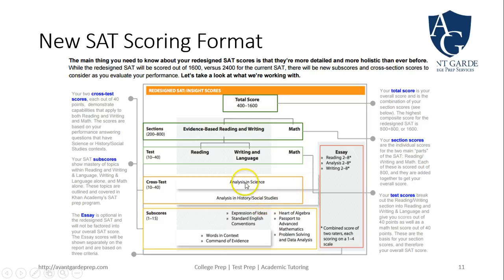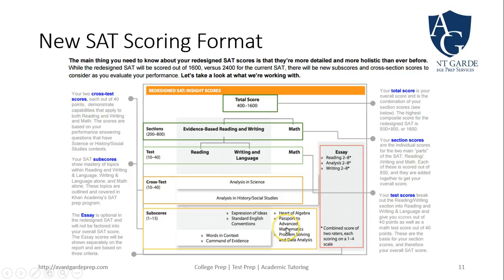Colleges may potentially use the science score, but it likely won't be used very often — the ACT has something similar and many colleges don't look at those individual subsection scores. There are also sub-scores on a 1 to 15 scale measuring competency across different skill levels, providing additional information to help focus on and improve in specific areas.